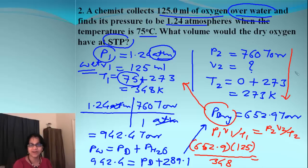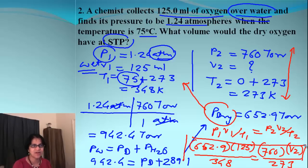When we come over here, we are going to use all these values for the standard STP conditions. So the pressure is 760, volume V2 is unknown, and the temperature is 273. So our job is to solve for V2. And that V2 value, when we solve, we end up getting V2 equals 84.2 milliliters.